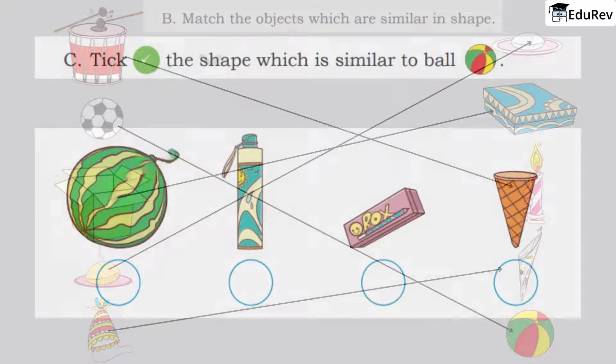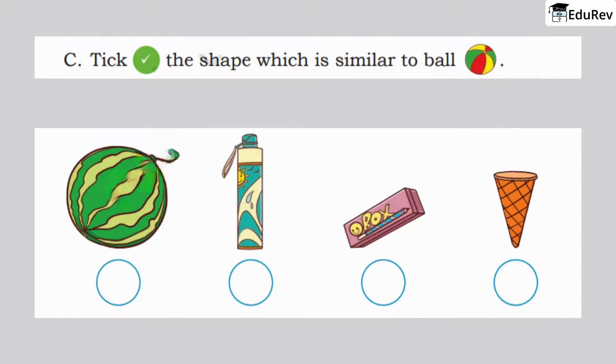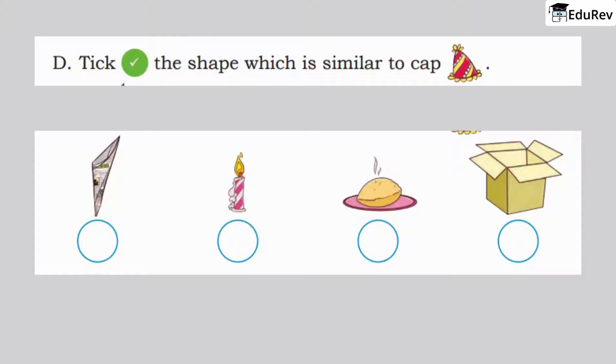Tick the shape that is similar to a ball. Look at these pictures and try. Yes, watermelon is similar to ball. Now, tick the shape which is similar to cap. This cone is same like the cap.